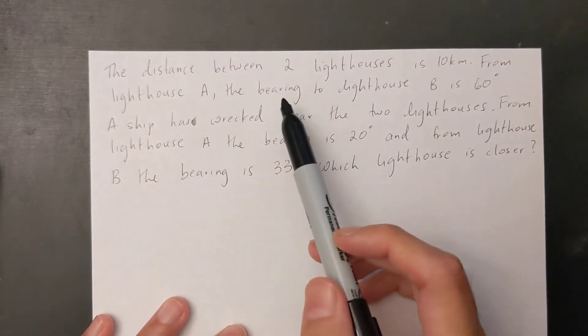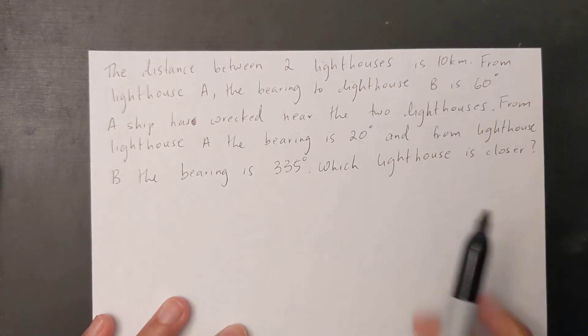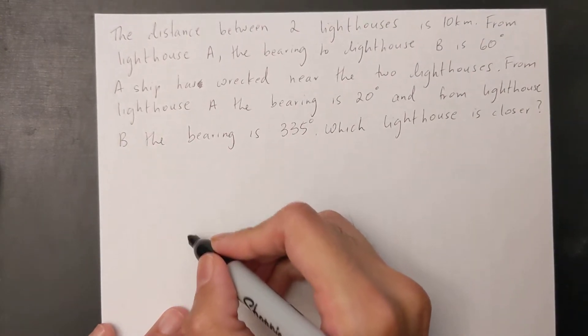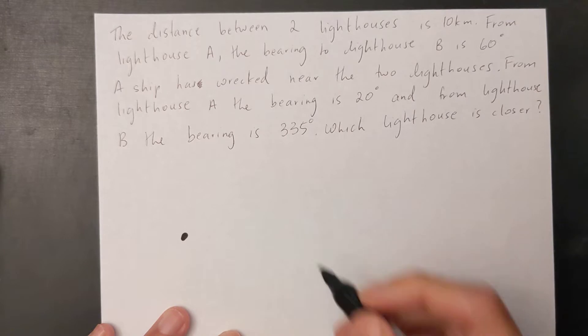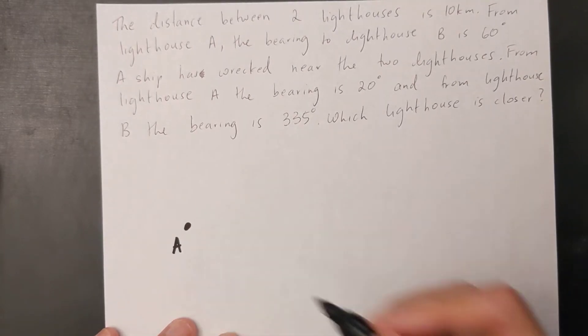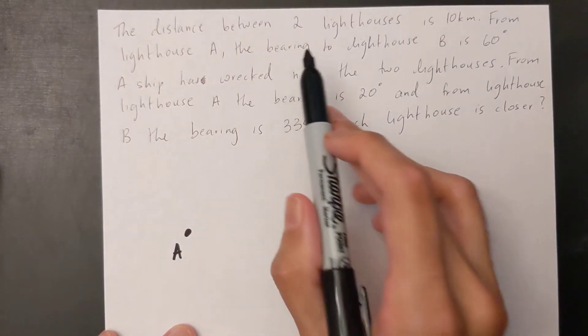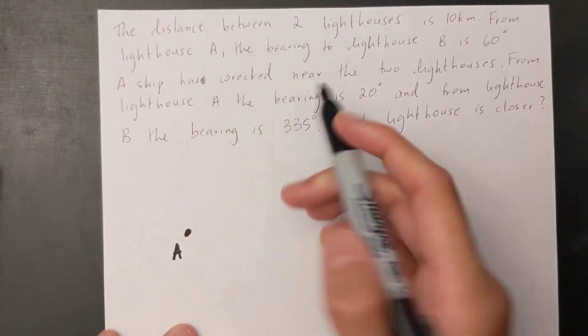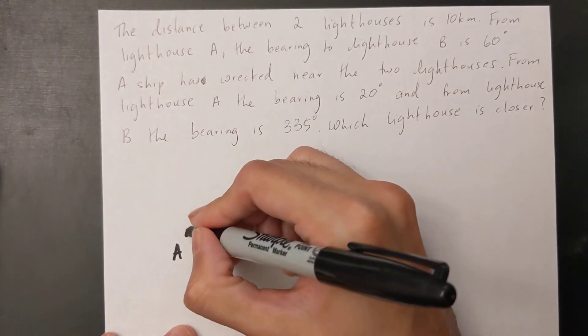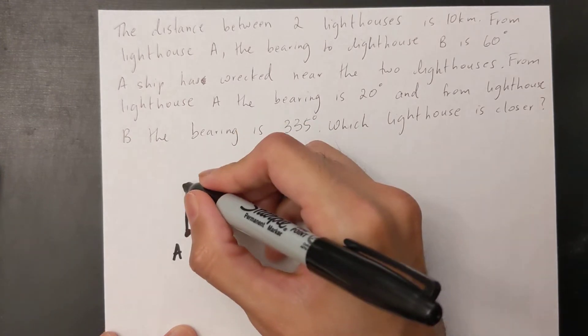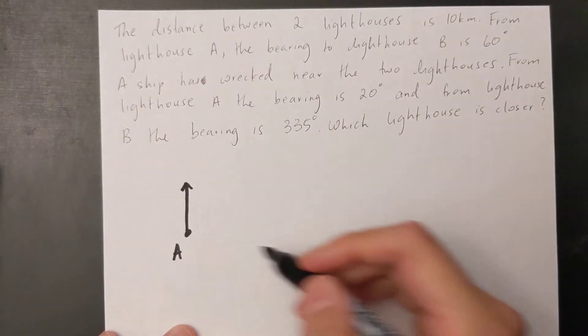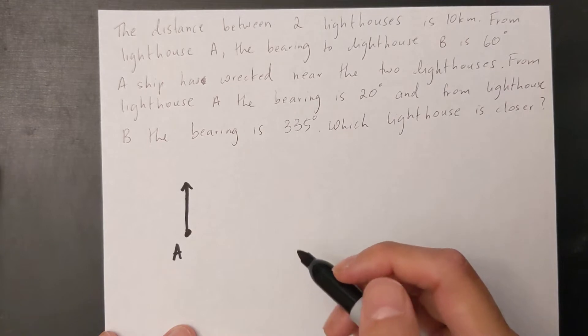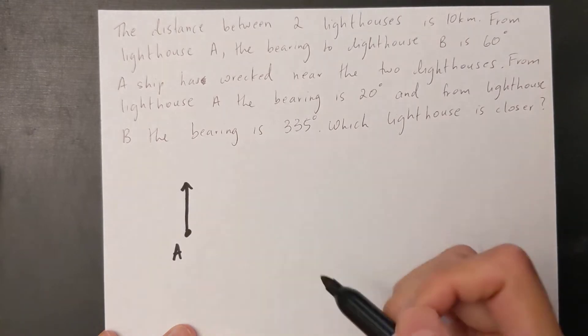From lighthouse A the bearing to lighthouse B is 60 degrees. So I'm just going to label my A over here. Anytime I'm doing a bearing question, I always draw an arrow going towards north and then you have to always draw your bearings in a clockwise direction.